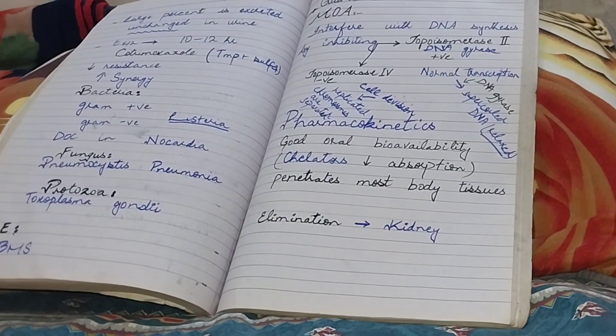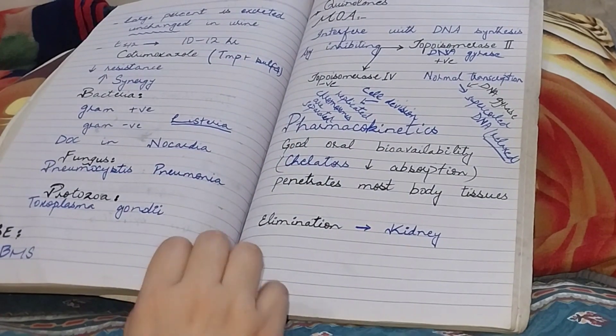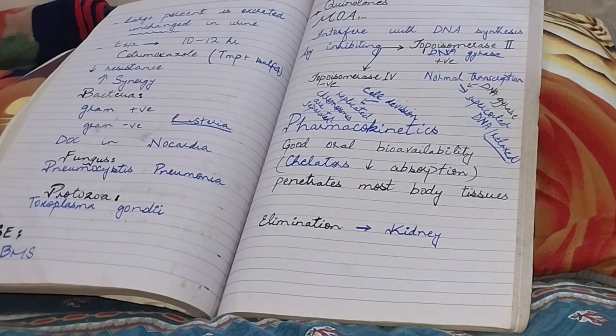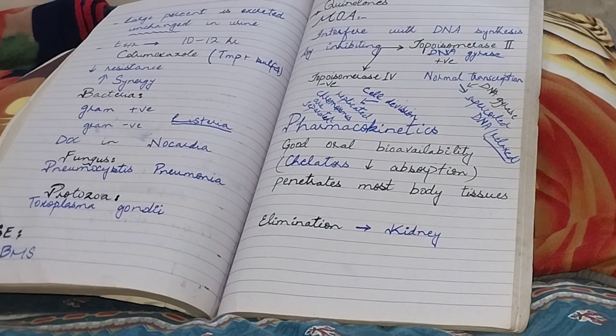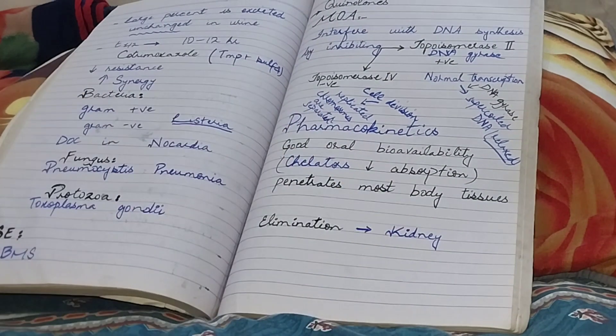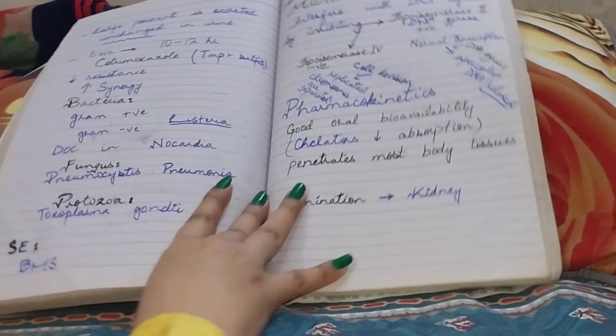Let's see the pharmacokinetics. Quinolones have good oral bioavailability and they penetrate into most body tissues. But like tetracyclines, chelators like iron and calcium can decrease the absorption of quinolones. Like most of the drugs, elimination is through kidney.